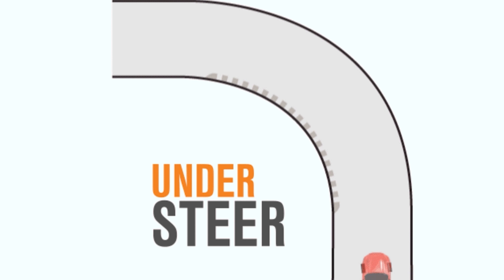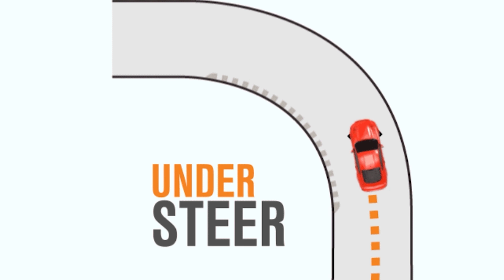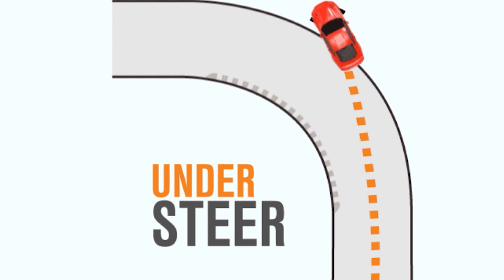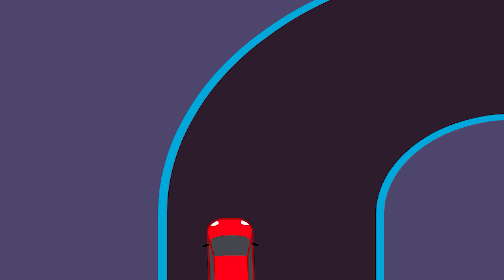Understeer is mostly found in front-wheel-drive cars. In a front-wheel-drive car, if you have wheel slip, you cannot turn the direction as intended — this is understeer.